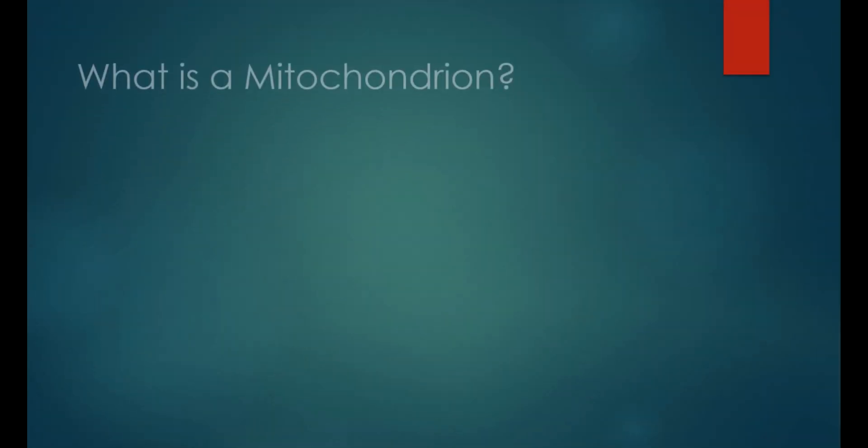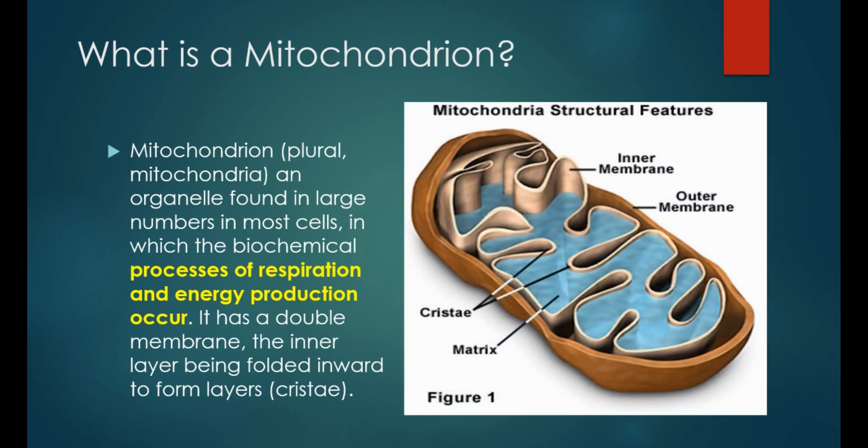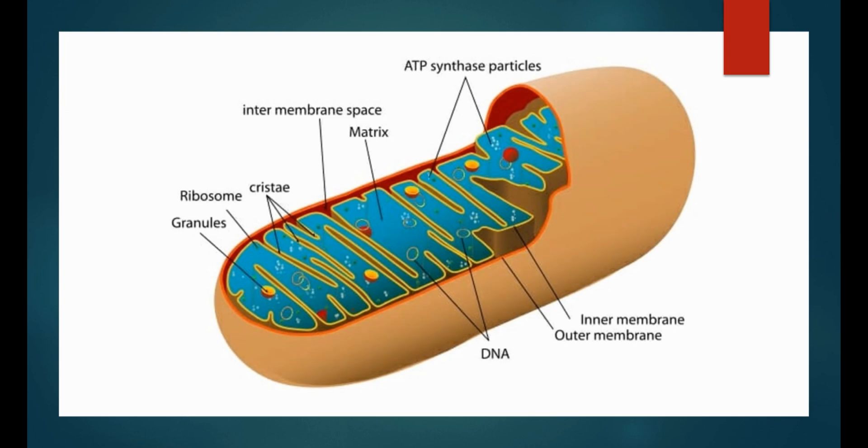Mitochondrion is an organelle found in large numbers in most cells in which the biochemical processes of respiration and energy production occur. Mitochondrion is the site for two stages of cellular respiration such as Krebs cycle and electron transport chain. It has an inner and outer membrane. The space enclosed by the inner membrane is called a matrix. The second stage of cellular respiration, the Krebs cycle, takes place in the matrix. The third stage, electron transport, takes place on the inner membrane.